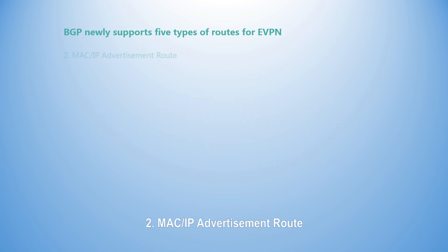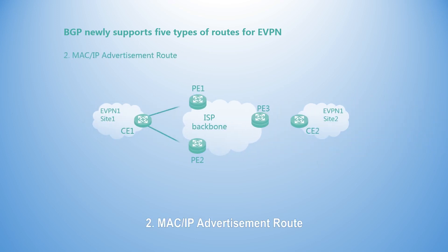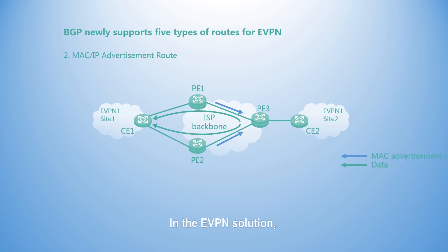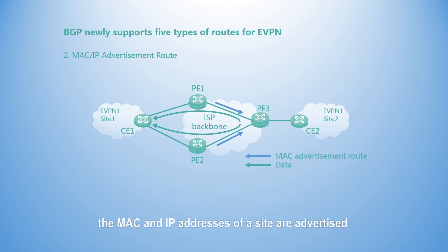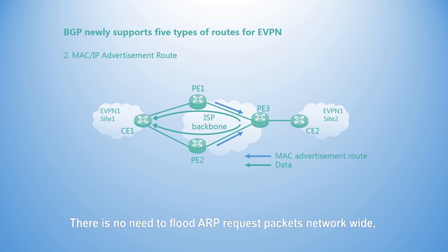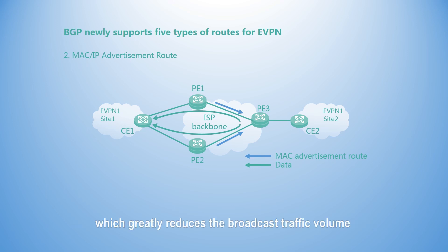Second, the MAC or IP advertisement route. In the eVPN solution, the MAC and IP addresses of a site are advertised through MAC or IP route advertisement routes. There is no need to flood ARP request packets network-wide, which greatly reduces the broadcast traffic volume on the network and therefore minimizes bandwidth consumption.